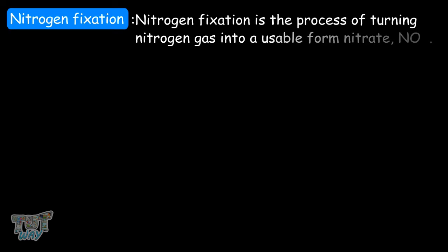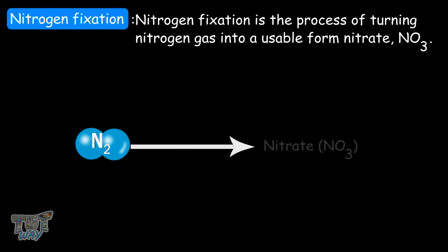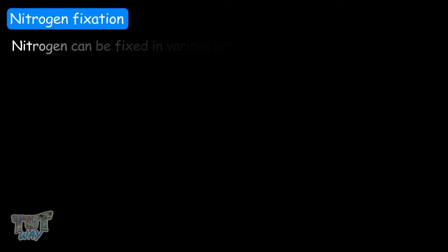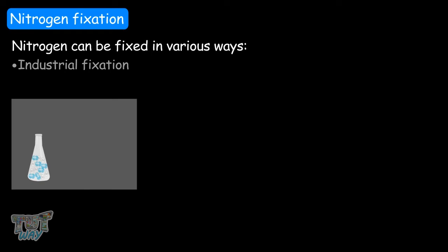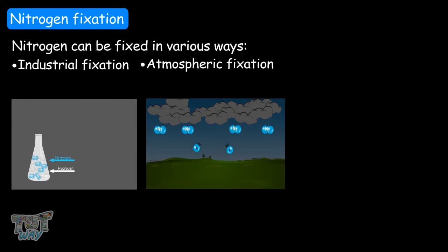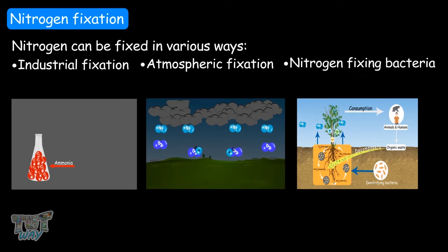And this breaking of the bond is called nitrogen fixation. Nitrogen fixation is the process where nitrogen is turned into a useful form, which is nitrate. Nitrogen can be fixed in various ways: first is industrial fixation, second is atmospheric fixation, and third is through nitrogen-fixing bacteria. Let's learn all three.